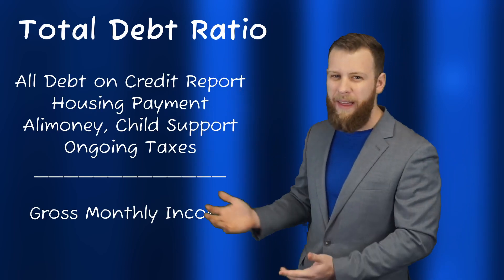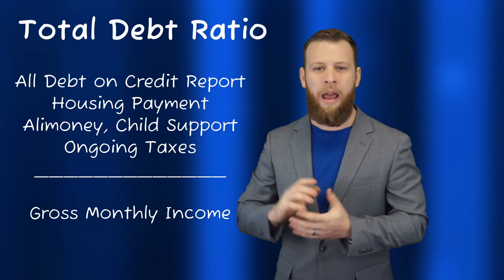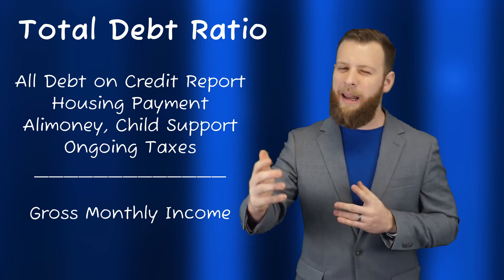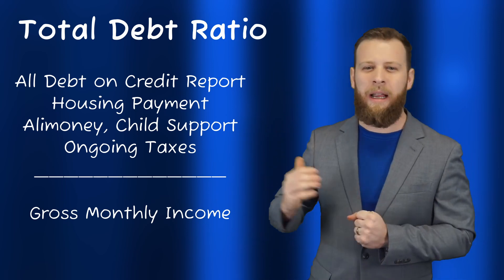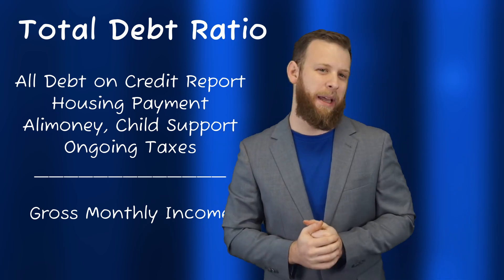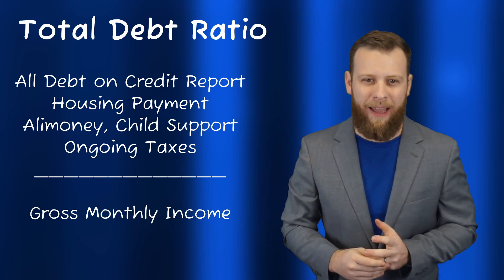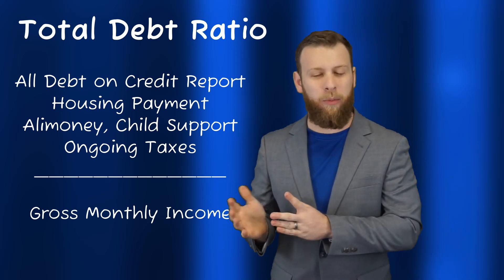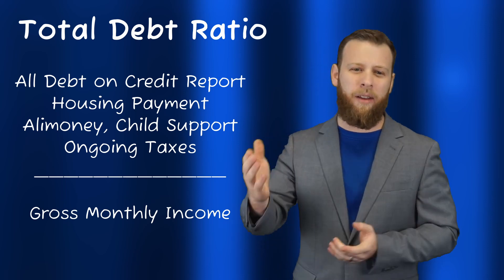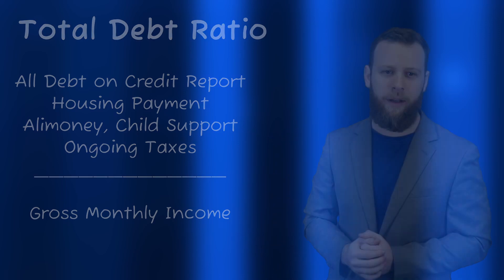For the total debt ratio, this is going to include all of the debt that's on a borrower's credit report. The housing payment, any payments for alimony, child support, or any ongoing tax obligations. Once we have all those added together, we're going to divide those by the gross monthly income, and that's going to give us that back-end or total debt ratio.